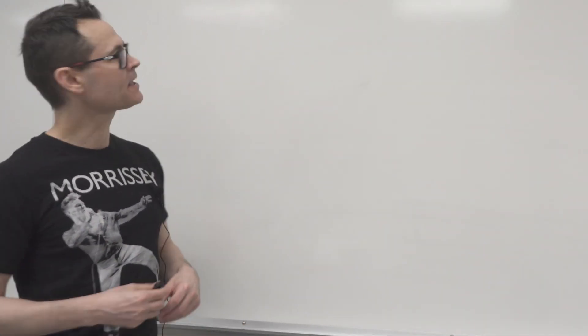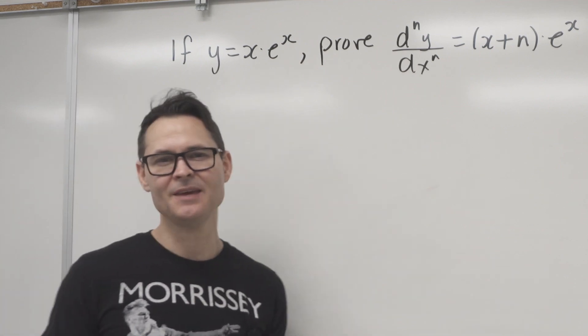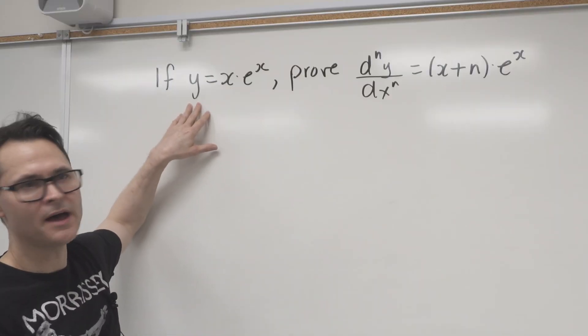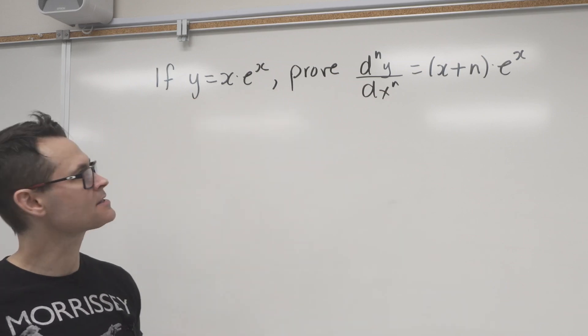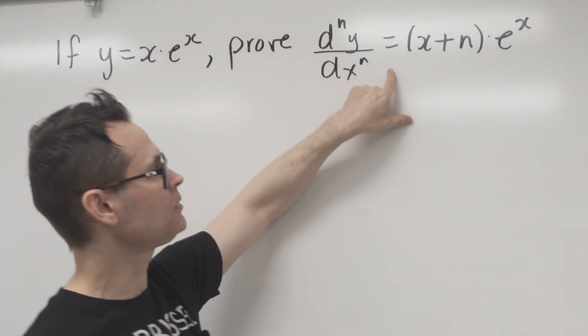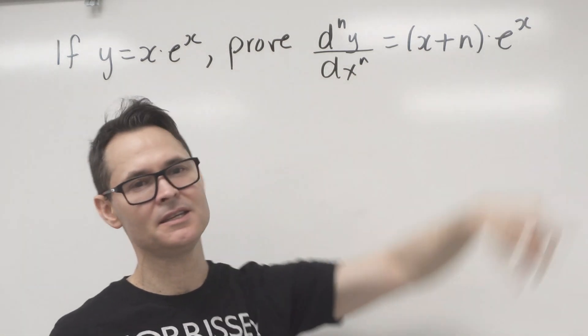Welcome back to the channel. Today we're going to do a proof by induction that involves a little bit of calculus. Let's take a look at the statement that we're trying to prove. It says that if we're given a function y is equal to x times e to the x, then the task here is to prove that the nth derivative is equal to x plus n times e to the x.